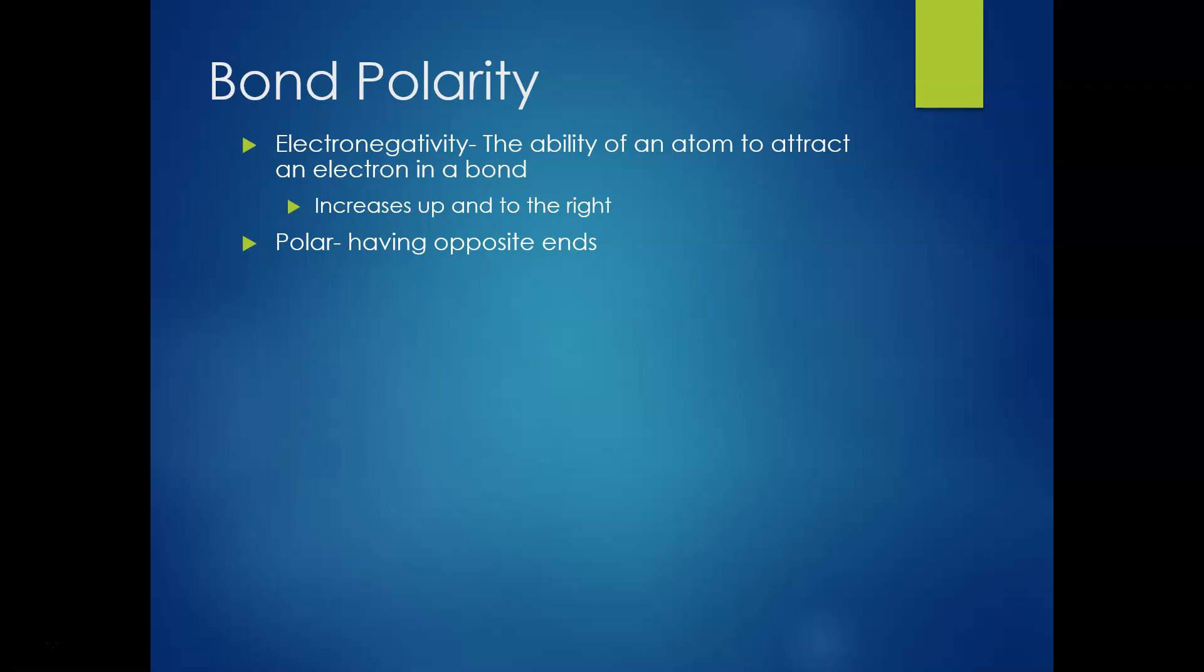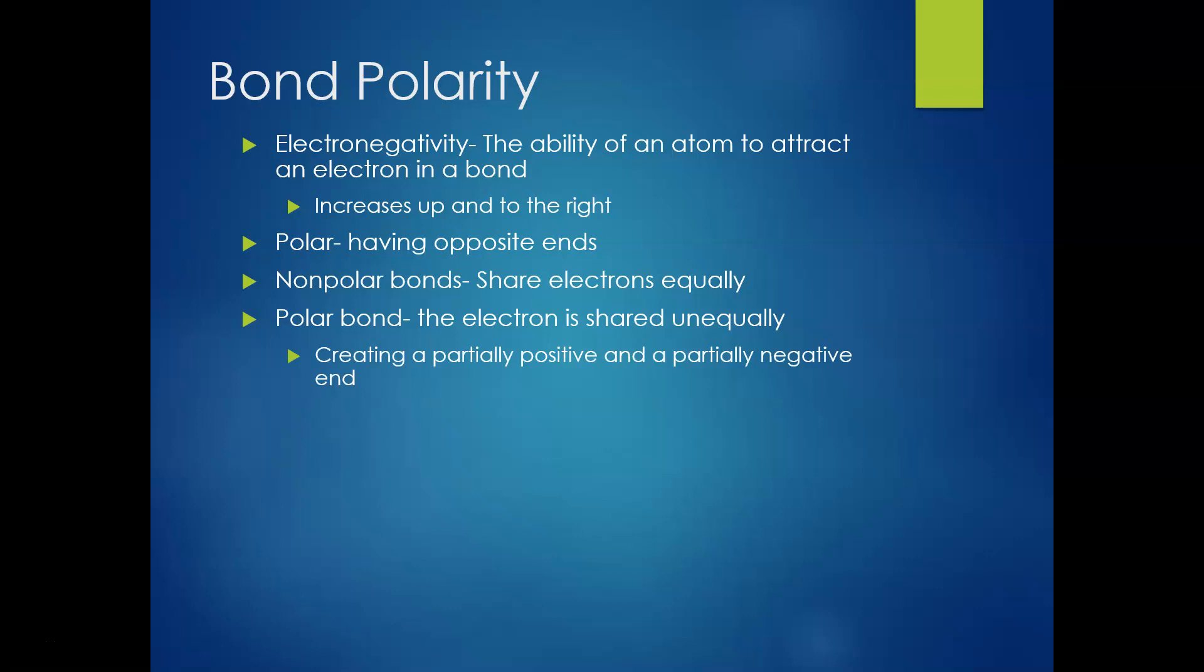So the word polar means having opposite ends, positive, negative. So if something is nonpolar, that means they share electrons equally. There is not one atom that's being a little bit greedy with those electrons. However, a polar bond, and keep in mind both of these are types of covalent bonds, has the electrons shared unequally. One of the elements involved in the bond is being a little greedy and keeping those electrons a little more often than it should. This creates a partially positive end, the element that's not getting the electrons as often as it should, and a partially negative end, the element that is getting the electrons more often than it should, the bully one.